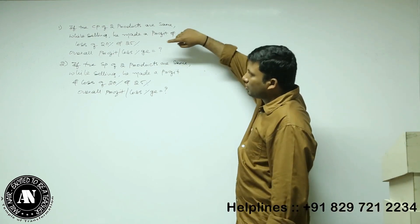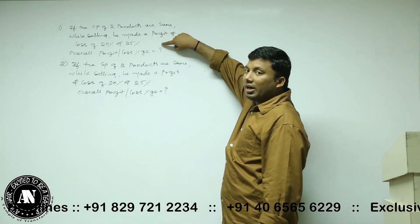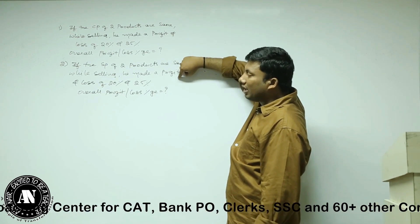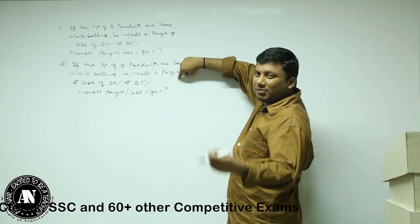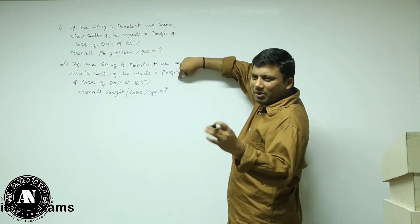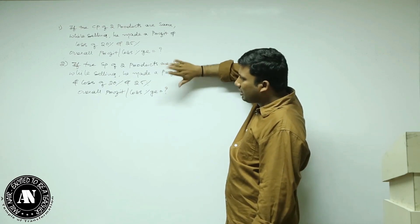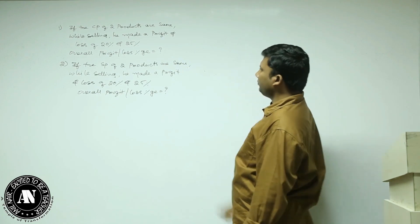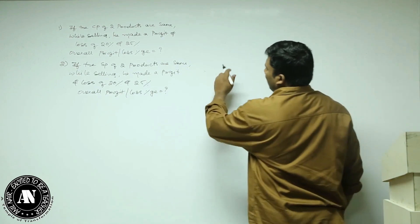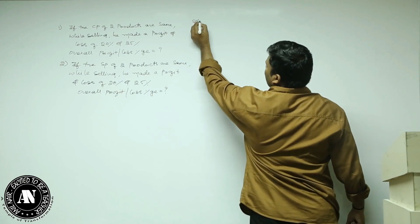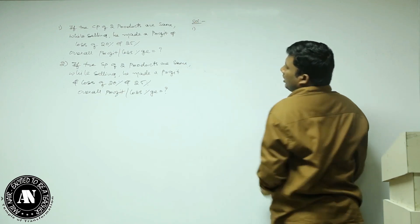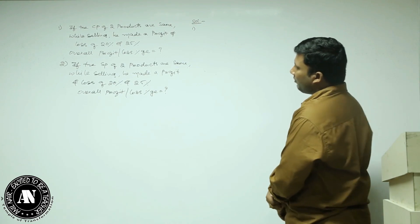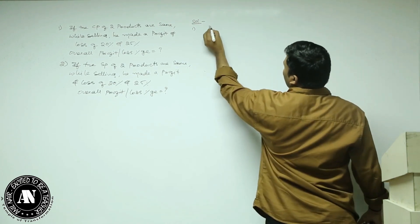The reason behind solving this question is there is a notation A plus B by 2. You know how to solve if profit and loss percentage are the same — some notation will be there, x squared by 100%. Let us not use that. Listen carefully. If the cost price of two products are the same, while selling, he made a profit and loss of 20% and 25%.